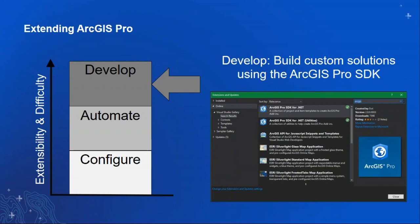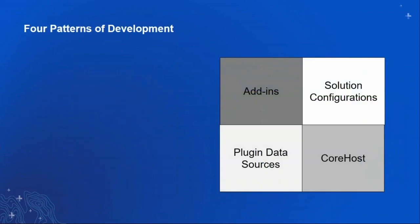The final way to extend ArcGIS Pro — and the one we're focusing on today — is to develop your own custom solutions with the Pro SDK. This method gives you the most flexibility but is also the most difficult and time-consuming. One caveat before you start: check with your IT folks to make sure you're allowed to do this. Unlike a Python script, which is just a text file, the output from a Pro SDK project is actually a small piece of software, so you want to ensure you can deploy it before spending time developing it.